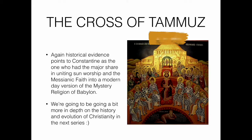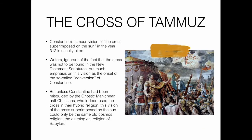Constantine had the major share in uniting sun worship and the Messianic faith into a modern-day version of the mystery religion of Babylon. His famous vision of the cross superimposed on the sun in the year 312 is usually cited, with writers ignorant of the fact that the cross was not in the New Testament putting a lot of emphasis on it as the onset of Constantine's so-called conversion to Christianity.